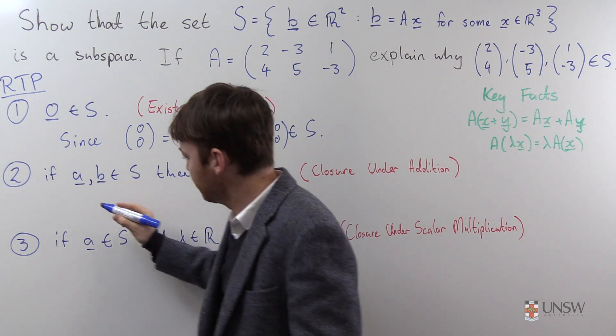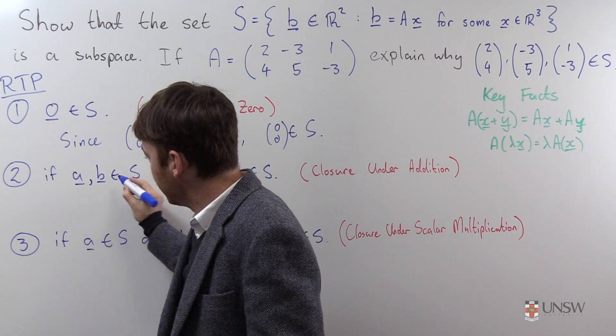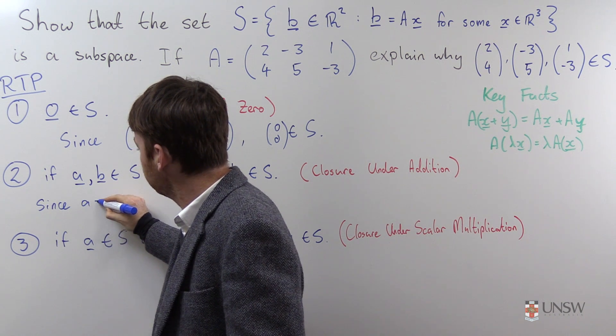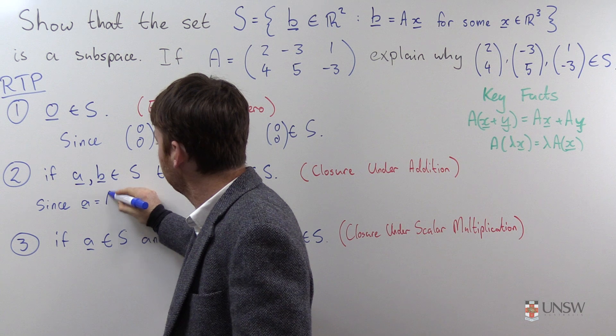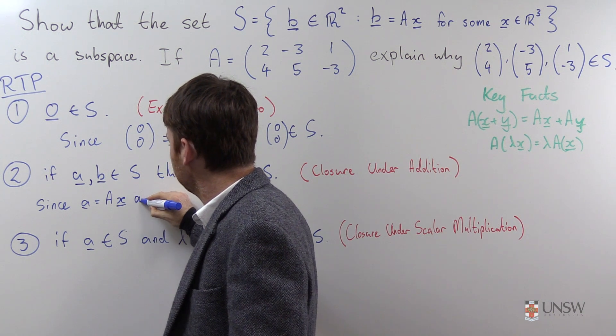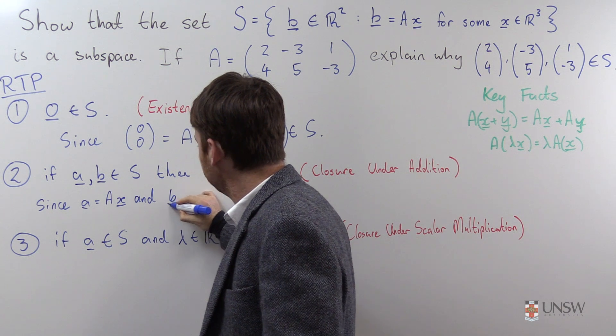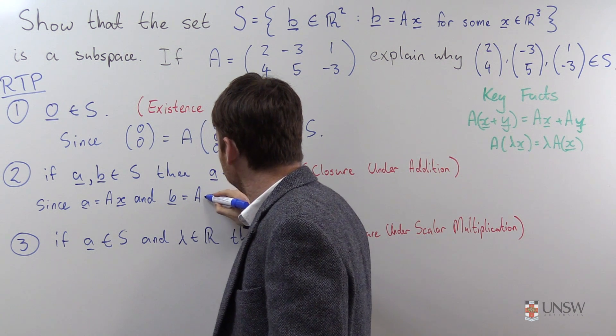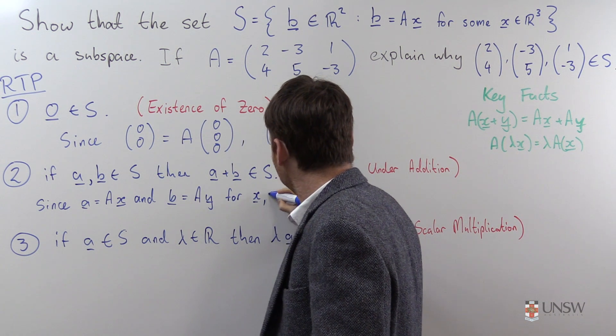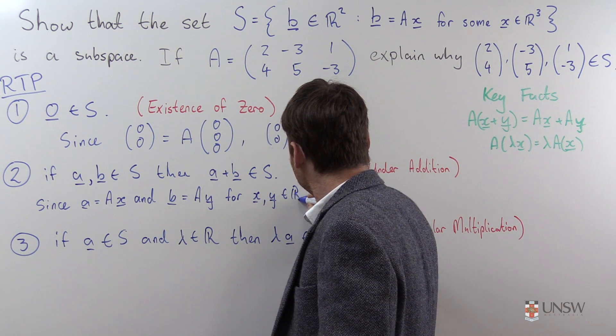So let's start with two elements from the set S. Since A is equal to A times some vector X, and B is equal to A times some vector Y for X, Y elements of R3.